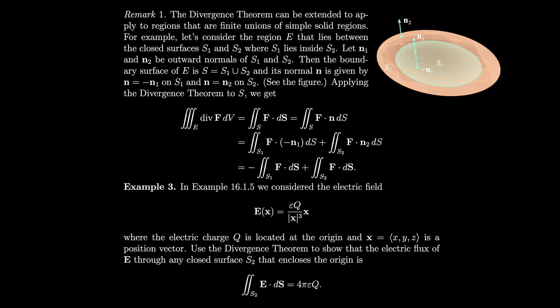Similar to the way we extended Green's theorem to apply to regions with holes in them, we can extend the divergence theorem beyond simple solid regions to apply to finite unions of simple solid regions — that is, regions that have hollow spaces or holes in them. Think of it like an egg: we're working on the white part, not including the yolk.